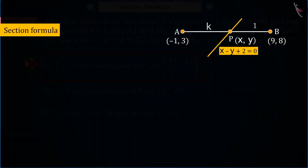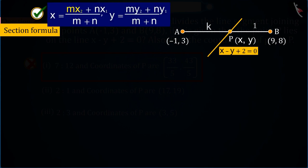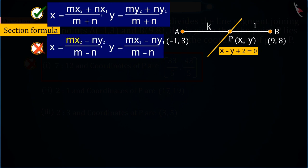Because in the section formula, in place of mx2 + nx1 over m + n and my2 + ny1 over m + n, instead mx2 - ny2 over m - n and mx1 - ny1 over m - n was placed.